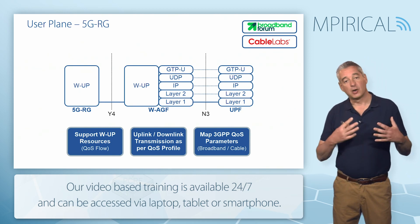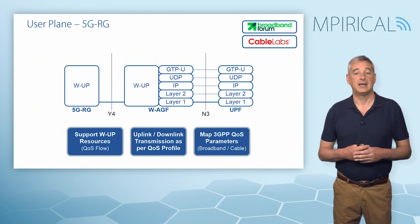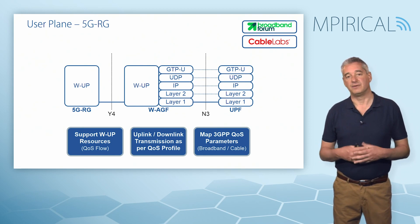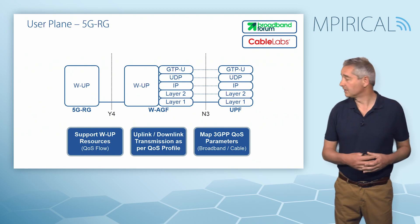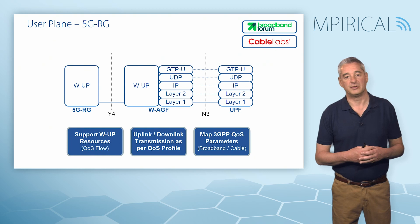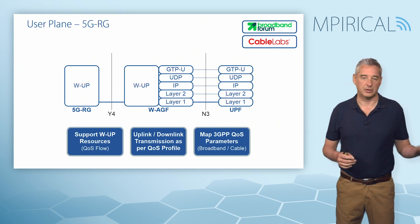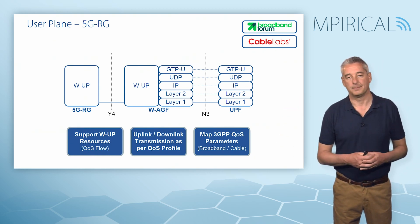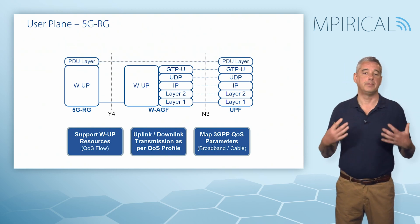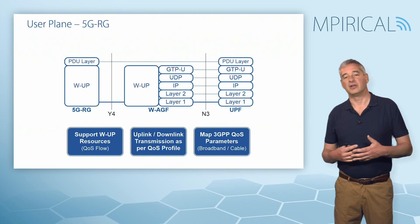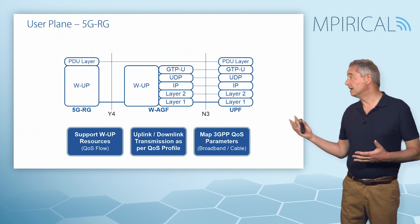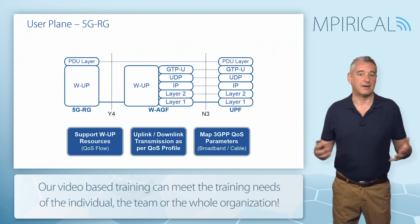Uplink and downlink transmission must enforce the QoS profile, physically allocating those resources. Managing the 3GPP-based QoS parameters and mapping them onto the broadband or cable network is also required. Sitting across the top we have the PDU layer — our user traffic — which can be IP, unstructured data, or Ethernet frames.